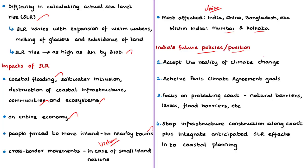In the later part of the editorial, the author talks about what should be India's future policies. First, we must accept that climate change is real and the challenges it poses are real. The entire world should try to achieve the goals of the Paris Climate Agreement by meeting nationally determined contributions. India must focus on protecting the coast through measures like natural barriers, levees, flood barriers, or hard barriers to prepare for sea level rise. A levee is an embankment built to prevent the overflow of a river. Another measure is to stop infrastructure construction along the coast and integrate anticipated sea level rise effects into coastal planning activities, which will reduce exposure of risk to investors, builders, and insurance companies.